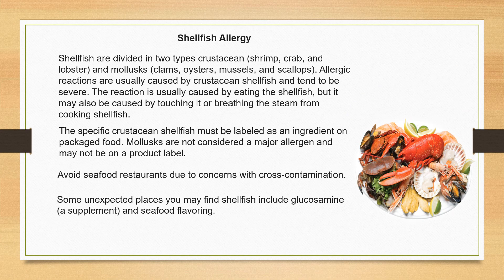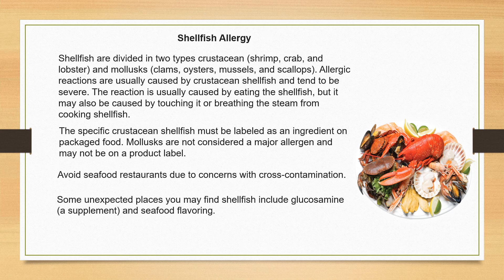Shellfish allergy: shellfish are divided into two types — crustaceans (shrimp, crab, and lobster) and mollusks (clams, oysters, mussels, and scallops). Crustacean shellfish allergies are the most common and tend to be the most severe. Crustacean shellfish are considered part of the eight major food allergies and must be on the product label. Mollusks are not considered a major allergen and may or may not be on a product label. If you have a shellfish allergy, avoid seafood restaurants because of cross-contamination. Unexpected places you may find shellfish include glucosamine supplements and seafood flavoring.